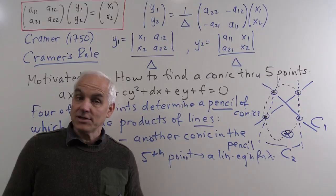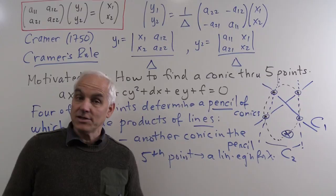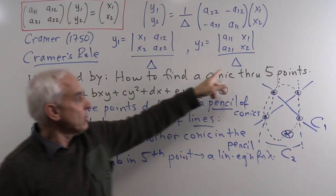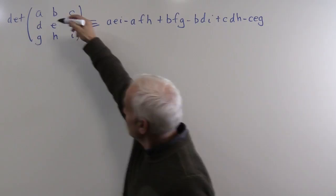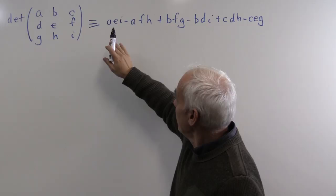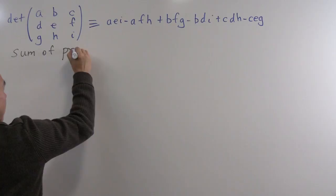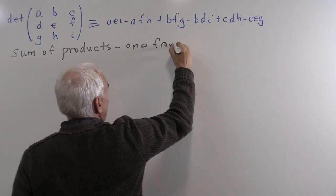A natural question is how to generalize this. The 17th and 18th century mathematicians were interested in larger systems of equations, and for that we need to generalize the notion of the determinant. For a three by three matrix A, B, C, D, E, F, G, H, I, the determinant is defined to be a sum of six terms with plus and minus signs — a sum of products, one entry from each row and column of the matrix.